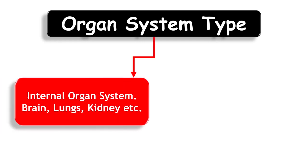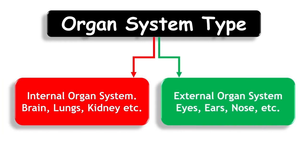Organ System Types. There are two types: Internal Organ System and External Organ System. Examples of Internal Organ System are Brain, Lungs, Kidney, etc. Examples of External Organ System are Eyes, Ears, Nose, etc.